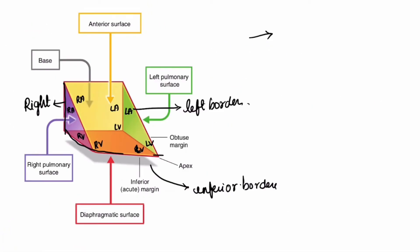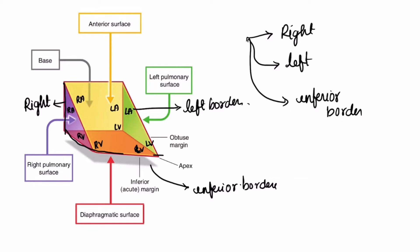We have three borders: right, left, and inferior. The right border is formed by the right atrium, as we see in the diagram — this is the right atrium here which forms the right border.